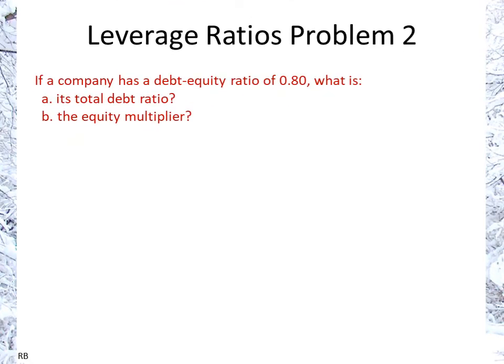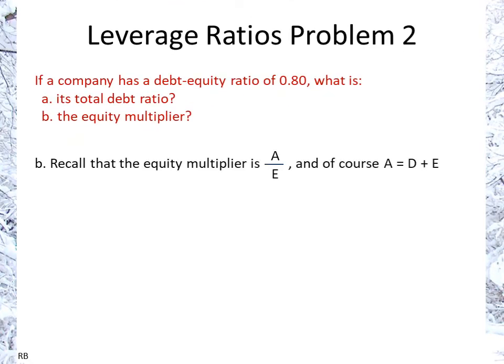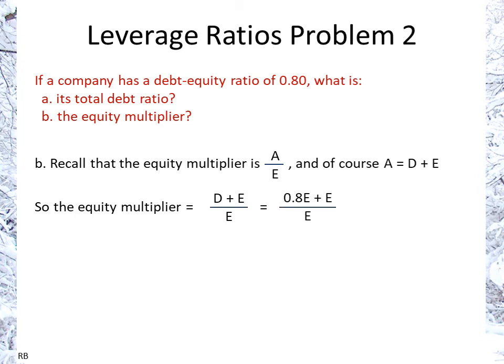Now for the equity multiplier. Recall that the equity multiplier is assets over equity. Again, assets equals debt plus equity, and debt equals 0.8 of equity. So we have (0.8 equity + 1 equity) divided by equity, which simplifies to 0.8 plus 1, giving us 1.8. Again, the actual value of equity doesn't matter — the ratio holds regardless.